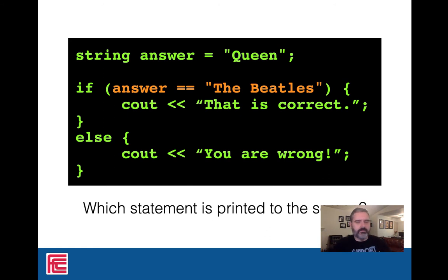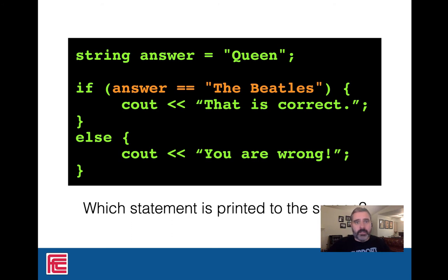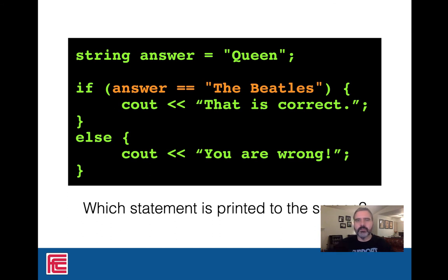For example, if I have a string 'answer' set to 'queen' — my favorite band of all time — and I check 'if answer == the Beatles', that conditional expression uses double equals to compare. For me, that's false, so I won't execute the top block. Instead, the else clause runs and we print 'you are wrong,' because my answer is queen, not the Beatles.